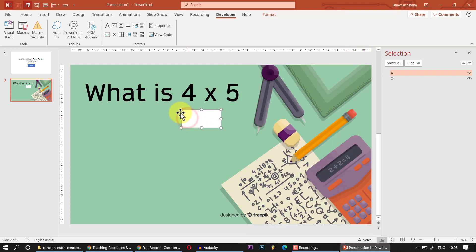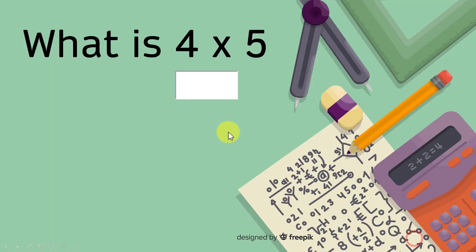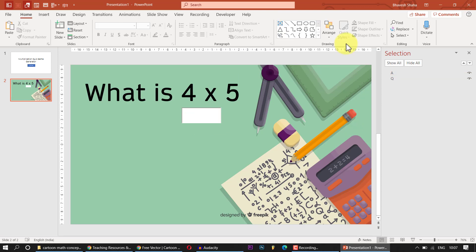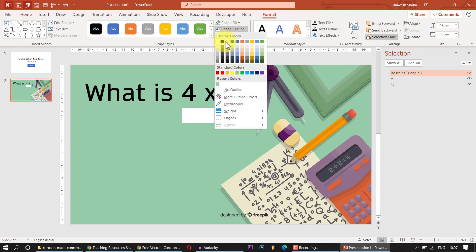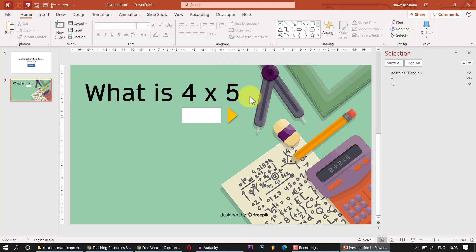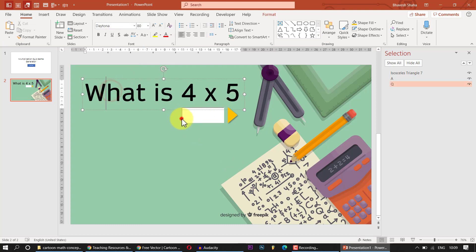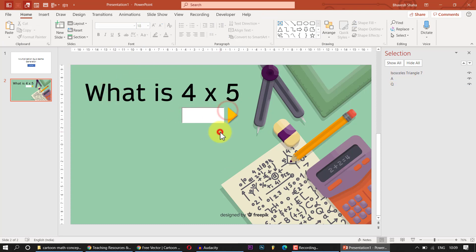We've finished making our text box. When you go to slideshow mode, you can type any number into it. Now I'll draw a rectangle shape to act as a submit button — clicking it will go to the next question and check whether the answer is correct or wrong. So we now have the question, the answer input, and the submit button.